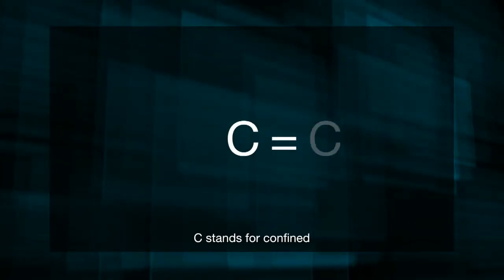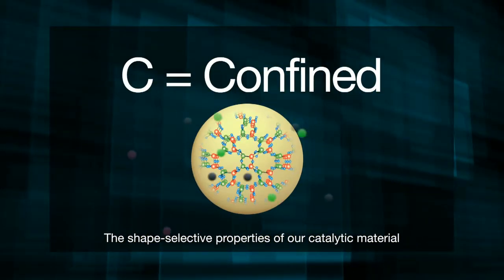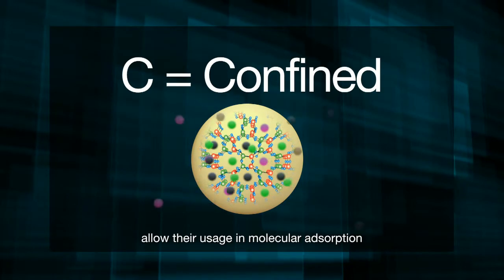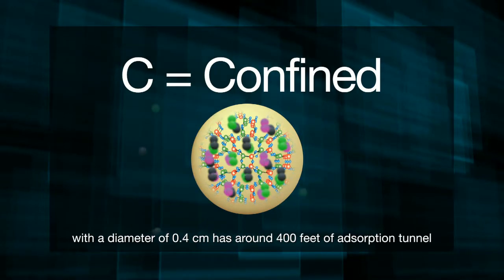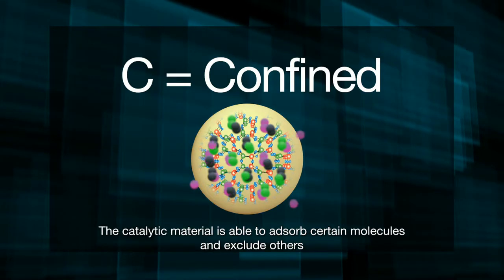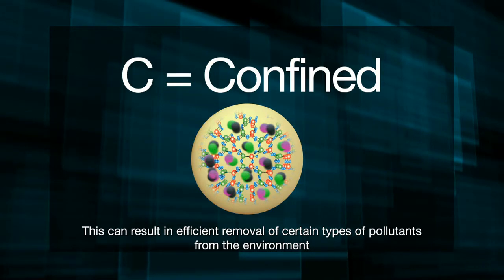C stands for confined. The shape-selective properties of our catalytic material allow their usage in molecular absorption. Our granule of catalytic material with a diameter of 0.4 cm has around 400 feet of absorption tunnel. The catalytic material is able to absorb certain molecules and exclude others, resulting in the efficient removal of certain types of pollutants from the environment.